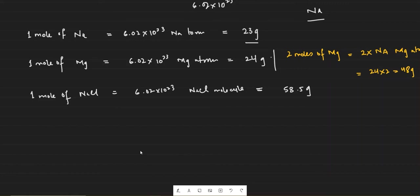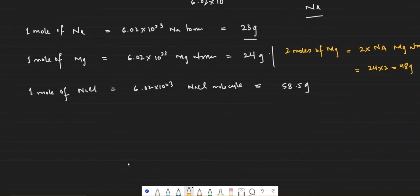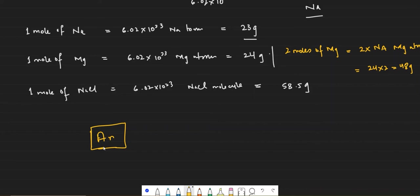We basically use carbon as the basic standard because carbon is abundant on Earth. Even when we talk about relative atomic masses, we use relative atomic mass (Ar) because all masses are measured in respect to the carbon-12 atom. We measure the mass of carbon-12 and then check how many times heavier or lighter the rest of the elements are, and from that we get all their masses.